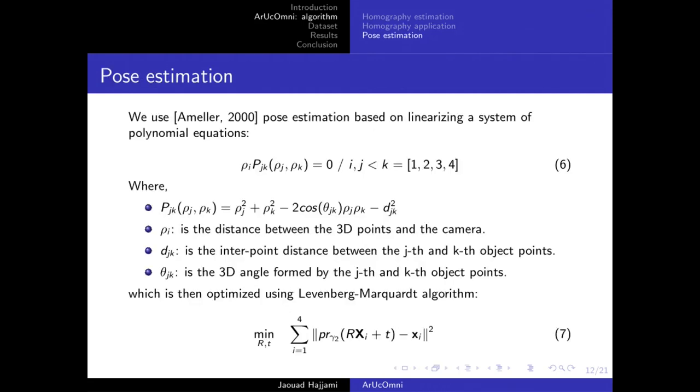For the last step, which is pose estimation, we use the method from MLPnP for pose estimation which gives a direct solution by linearizing a system of six polynomial equations for four points. Once we get that, we then optimize using LM optimizer, which is also based on the spherical model and the related Jacobians.